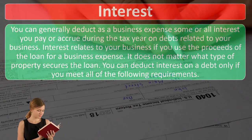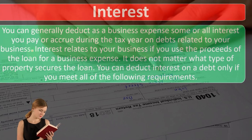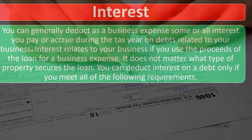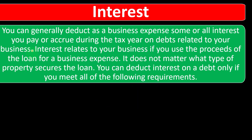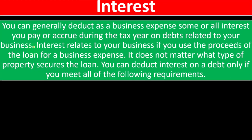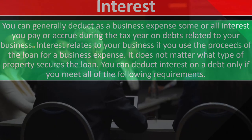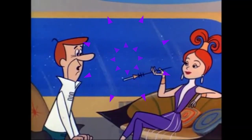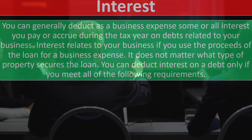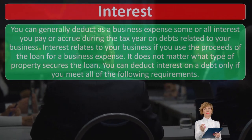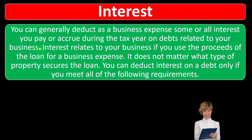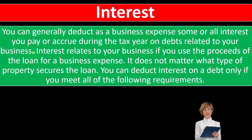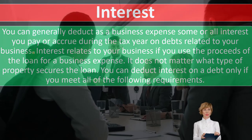You can generally deduct as a business expense some or all interest you pay or accrue during the tax year on debts related to your business. Interest gets a little confusing because of changes over the years — some personal interest has been deductible, and some interest is still deductible but differs from a business expense, like home mortgage interest. For example, if you're starting a Schedule C business and you need to buy equipment, you often finance the purchase by taking out a loan. Because the loan was for equipment used in the business, you would expect the interest — the rent on the purchasing power — to be a deductible item.